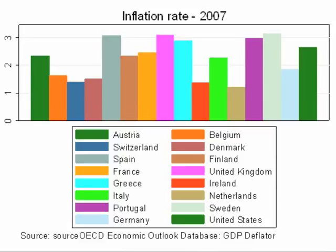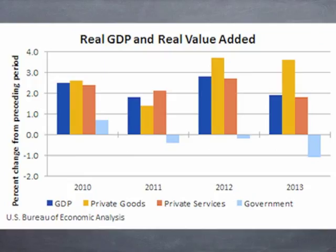P stands for the average price level of final goods and services, also known as the GDP deflator. Q stands for real GDP, or the real value of all final goods and services.